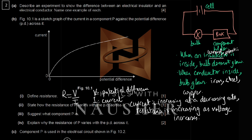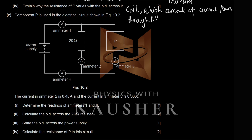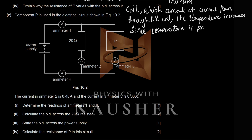Component P is a filament lamp. In a filament lamp there is a coil, and when a high amount of current flows through the coil, its temperature increases. Since temperature is proportional to resistance, the resistance increases — which explains the graph behavior.